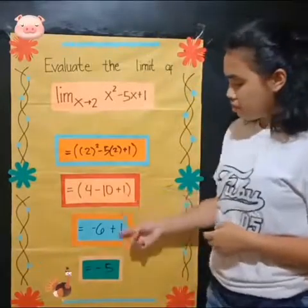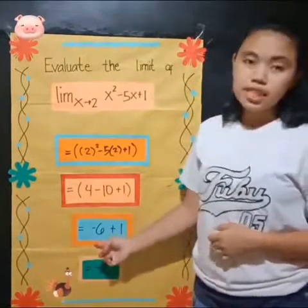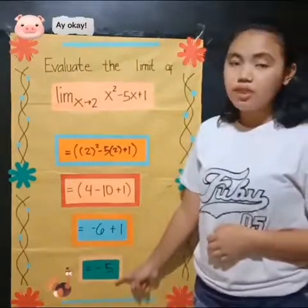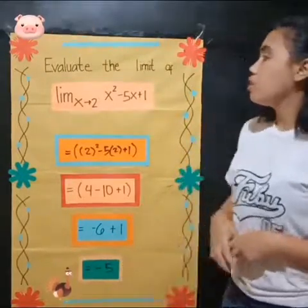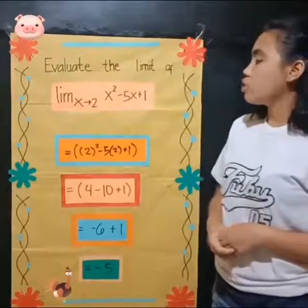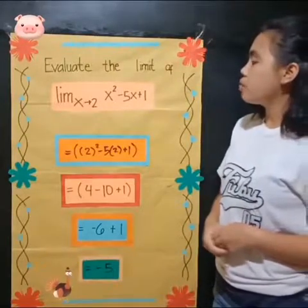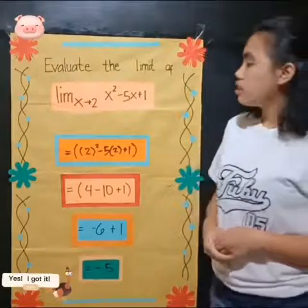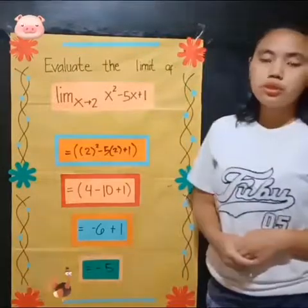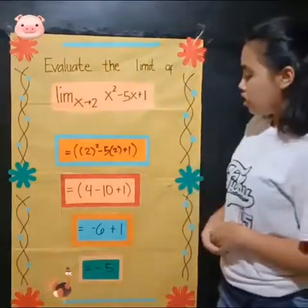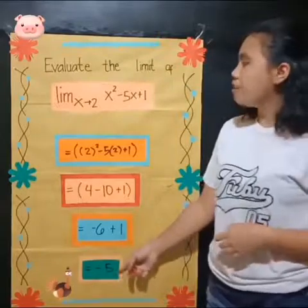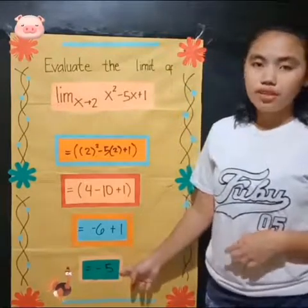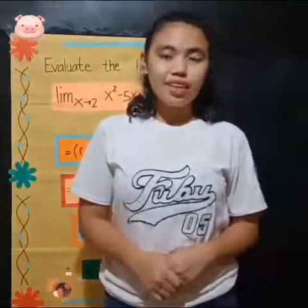Copy the positive 1. Negative 6 plus 1 is equal to negative 5. So the value of x squared minus 5x plus 1 as x approaches 2 is equal to negative 5. Its limit is negative 5. That's all. Thank you.